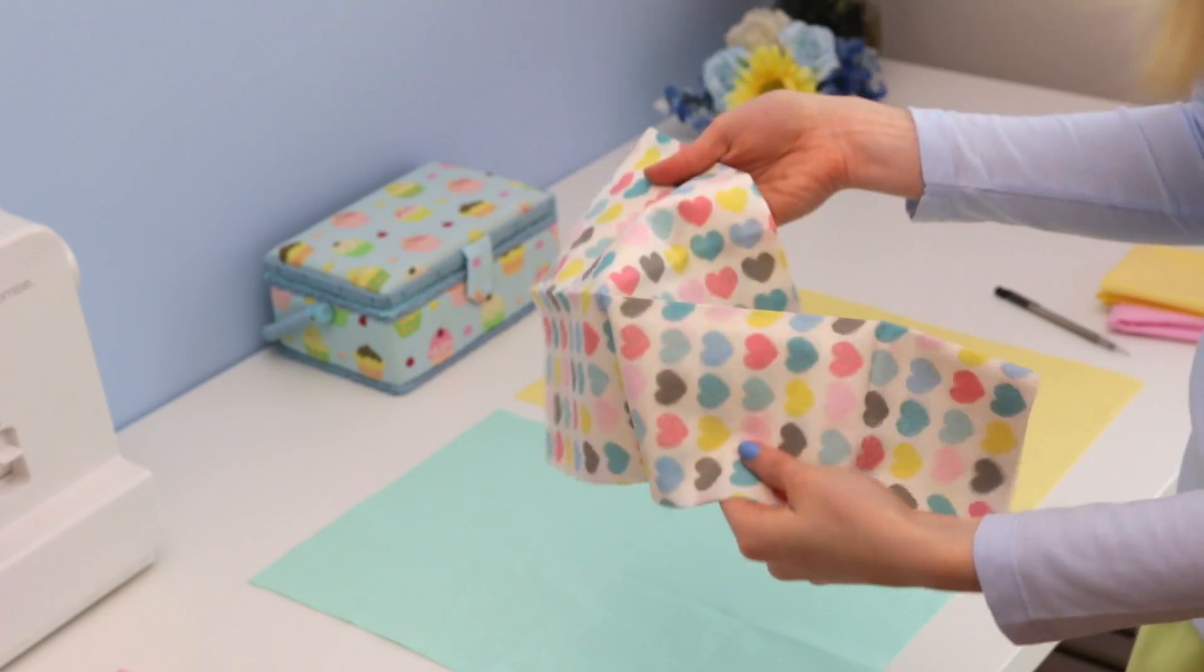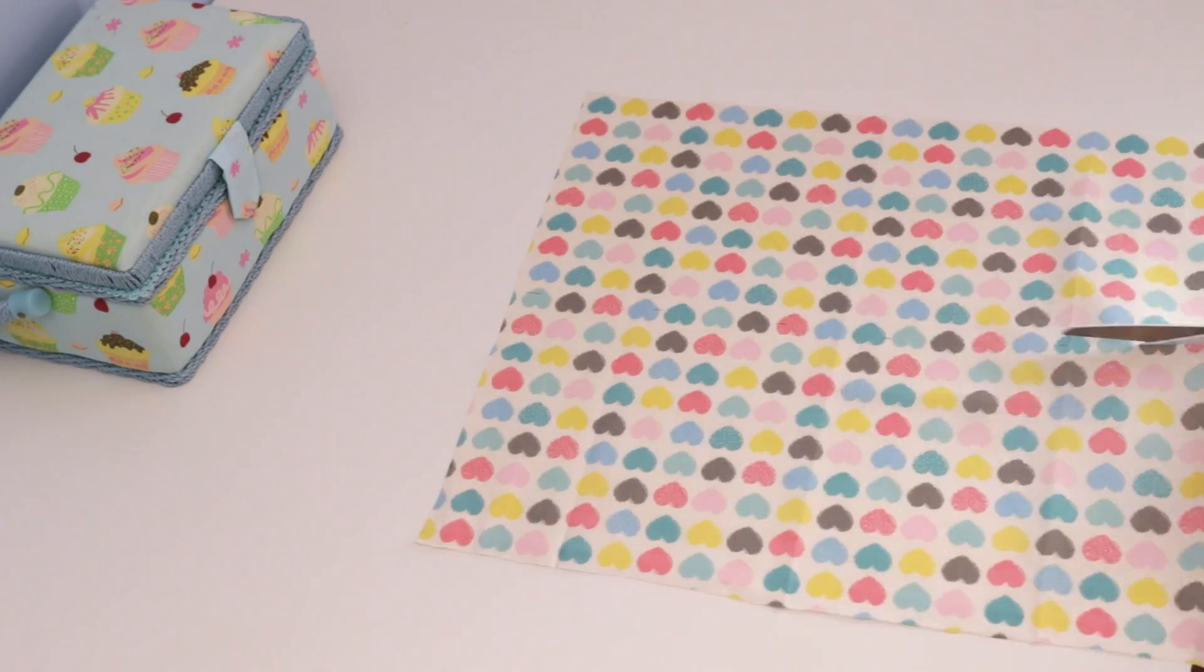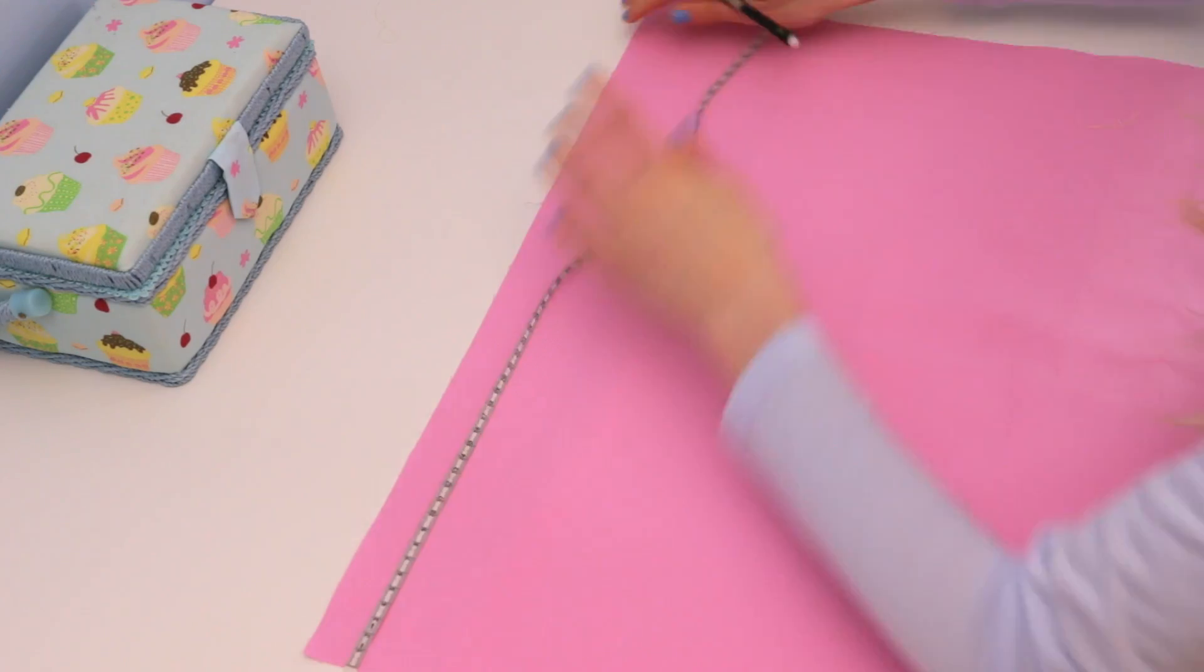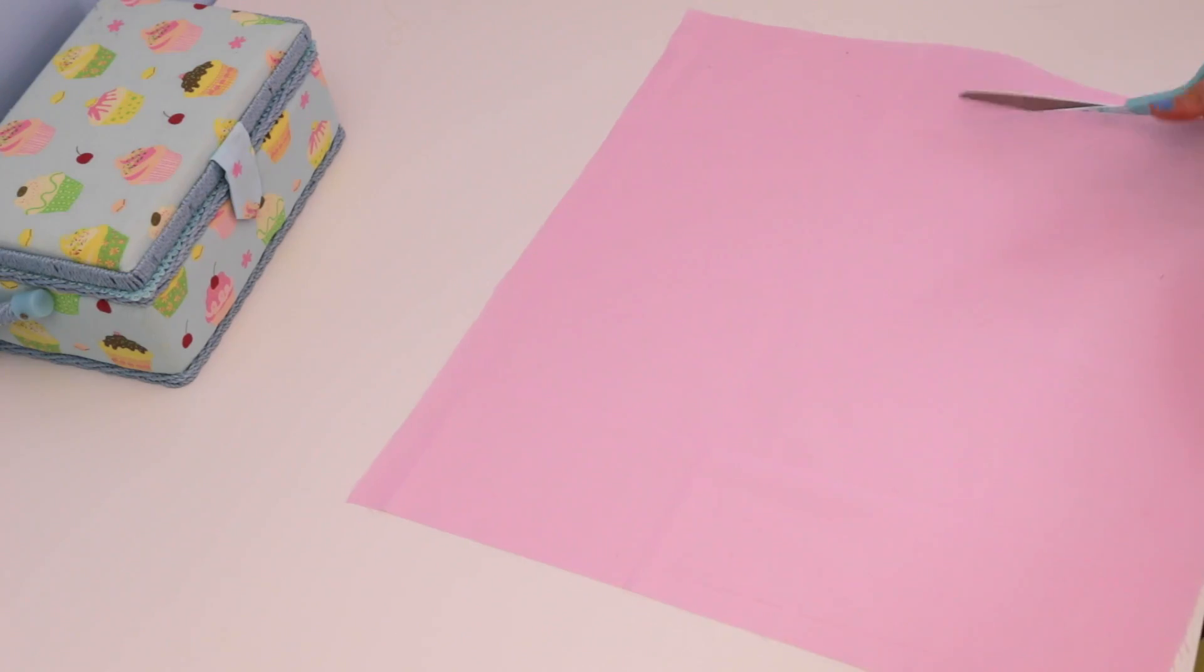Then for the heart accent fabric, I'm going to cut it to be 45 centimeters across again by 20 centimeters. And I'm going to cut two of these shapes. Finally, using the pink fabric, I'm going to cut it to be 45 centimeters by 40 centimeters. Again, I will be cutting two of these.